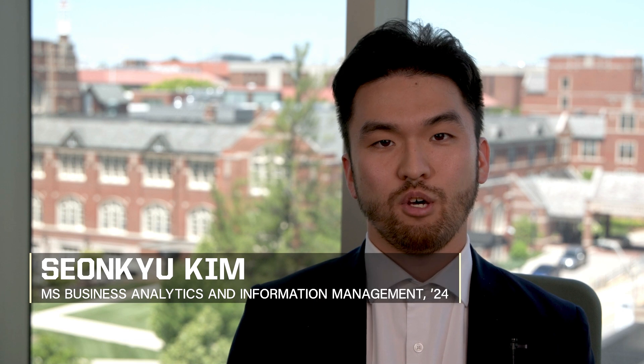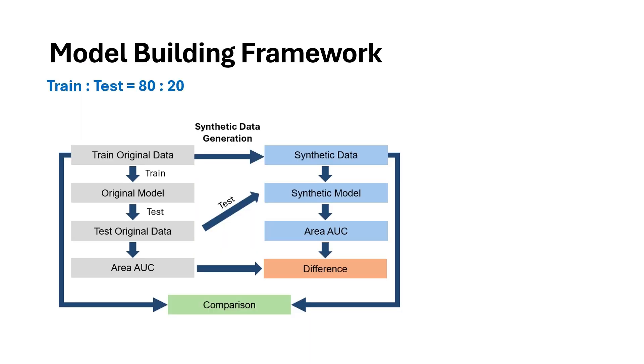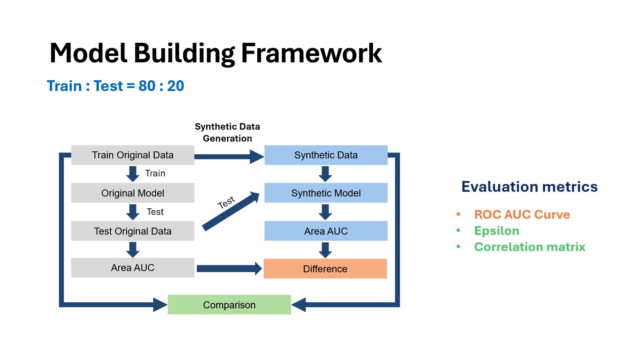After EDA and feature engineering, we generated synthetic datasets using various models, balancing utility and privacy with metrics like ROC and differential privacy. We split the original data, trained the predictive model, and created a privacy-preserving synthetic dataset. Both models were tested on the original test data and their performance was compared using the ROC curve.